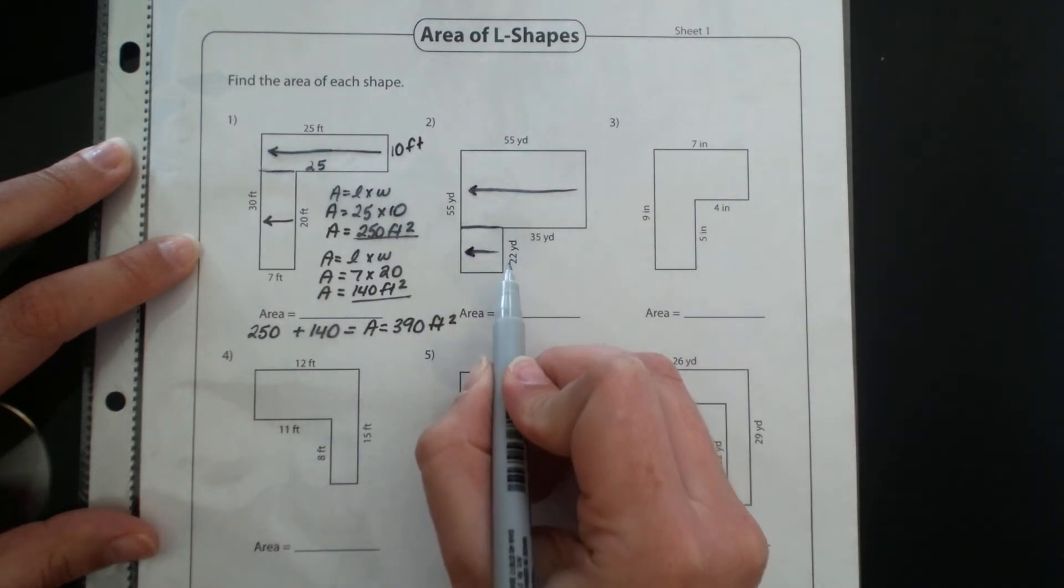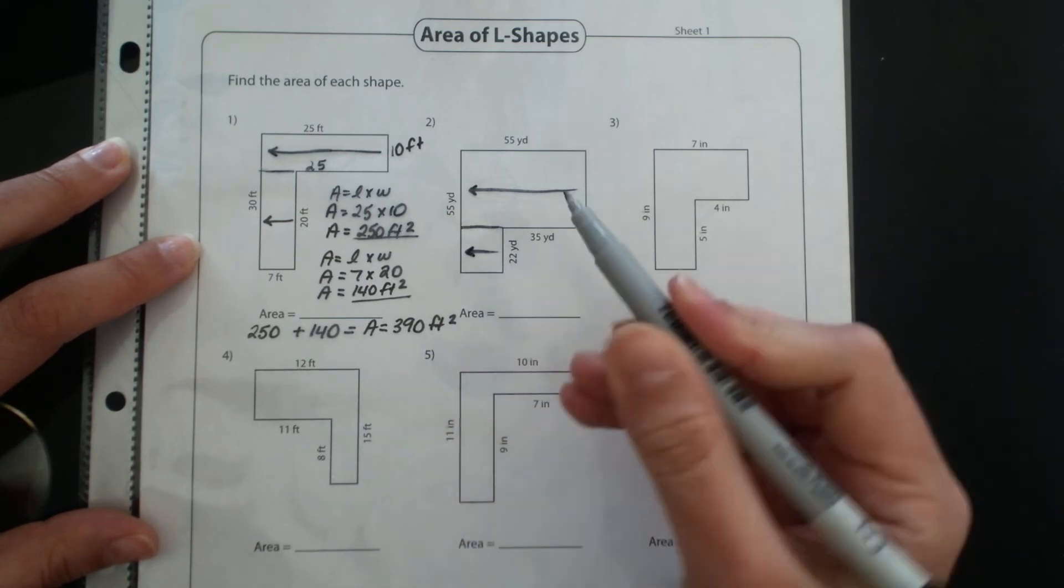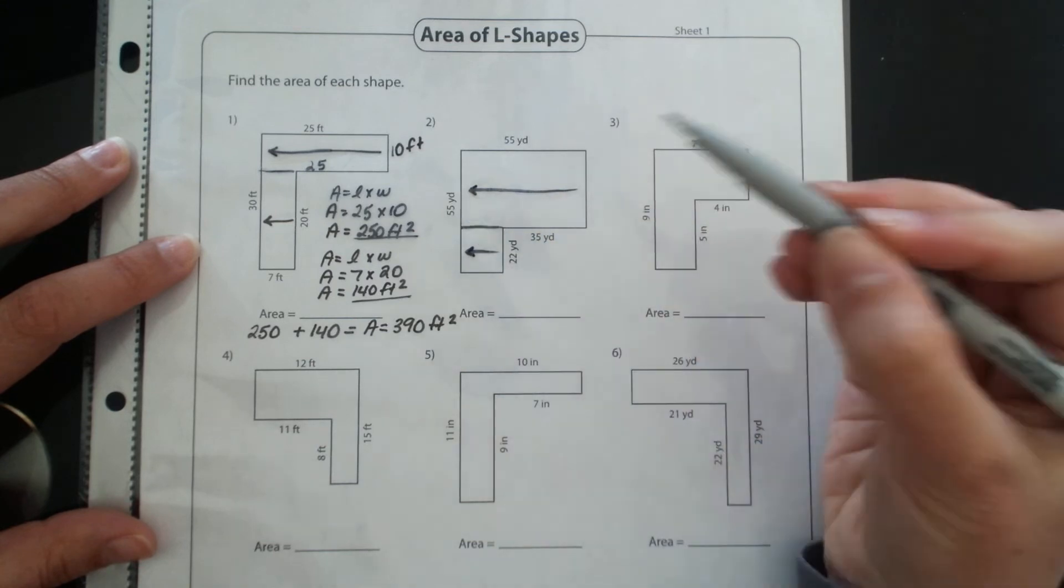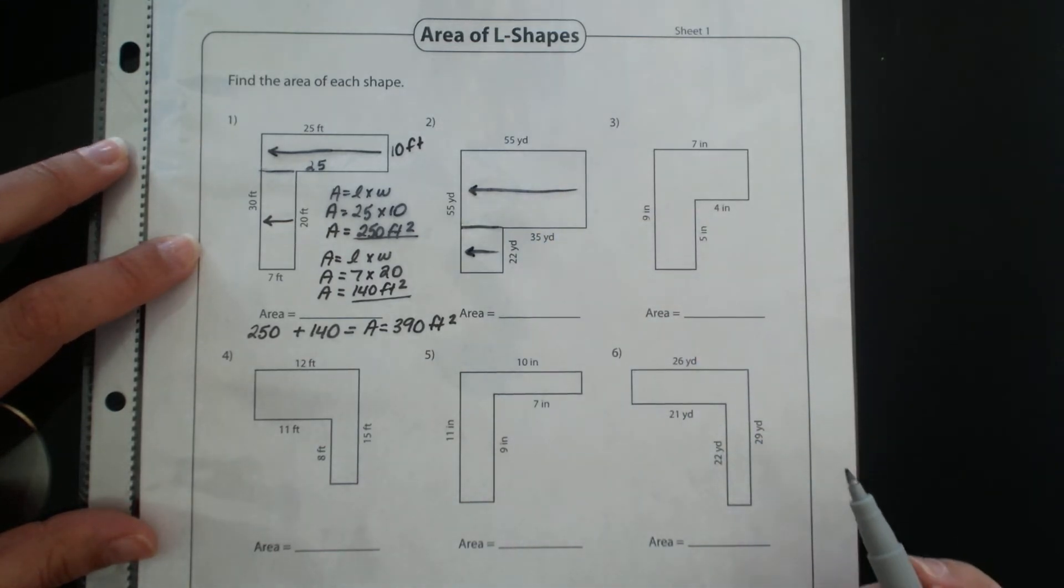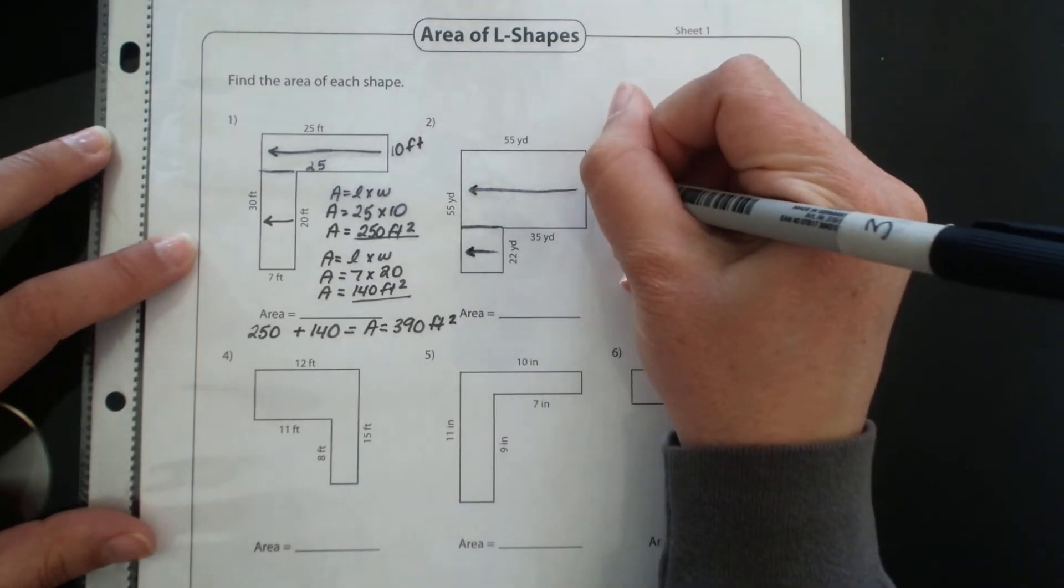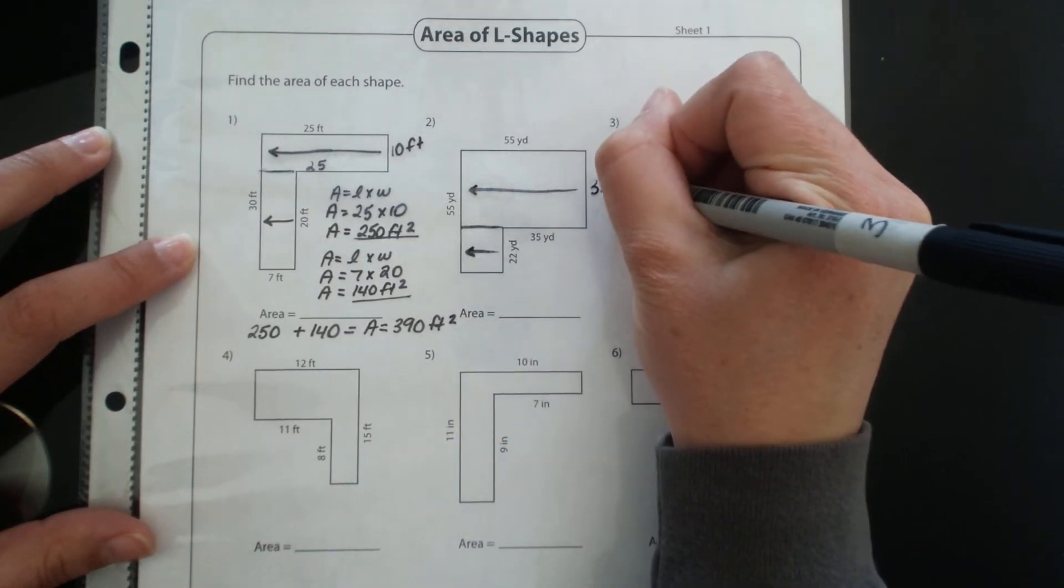And then I see I've got 22 here. So I know this side plus this side must equal 55. So 22 plus what number would give me 55, and then I can determine that this side has to be 33.